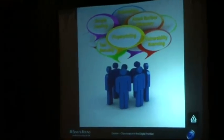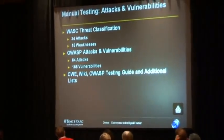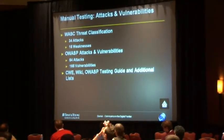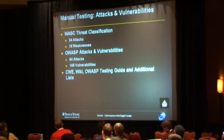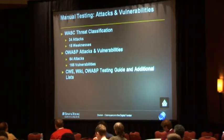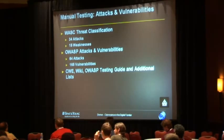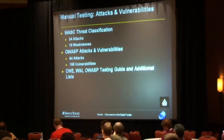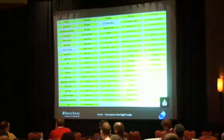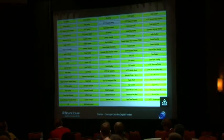When we get to the manual penetration testing phase, there's still plenty of tasks to perform — plenty of attacks to test in each and every section of the application. According to various attack and vulnerability lists, there are at least 64 different types of attacks and at least 165 different vulnerabilities. According to our analysis, there are 34 different types of attacks and 15 weaknesses. Adding lists such as CWE, OWASP testing guide, and others, we arrive at over 100 different types of web application level attacks.